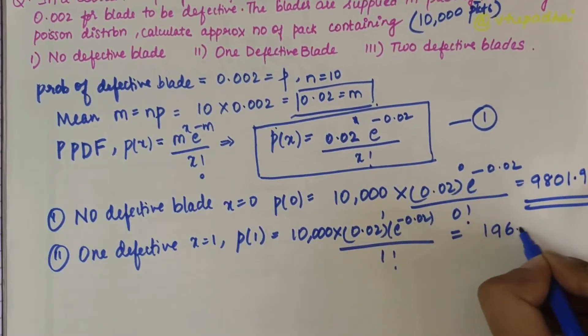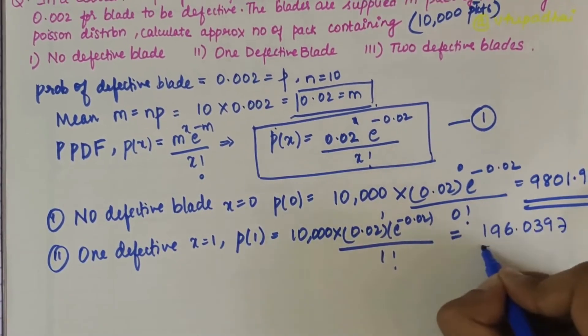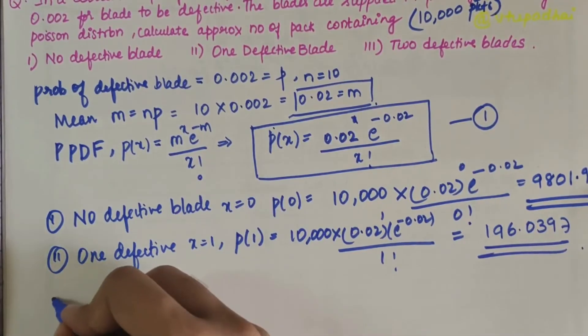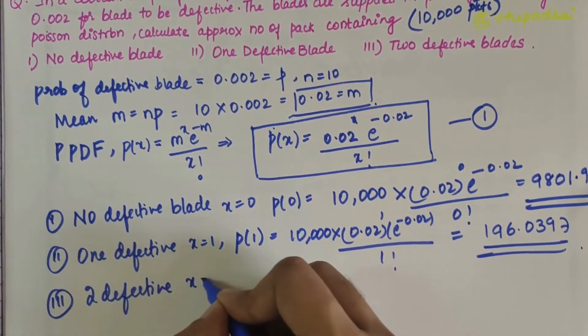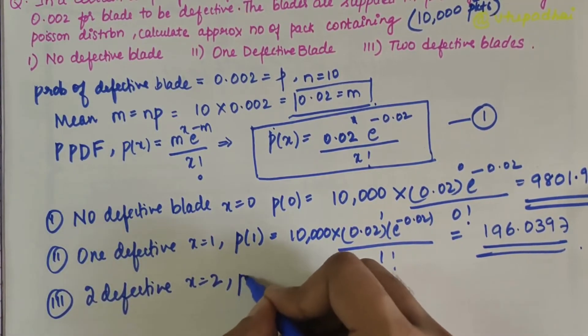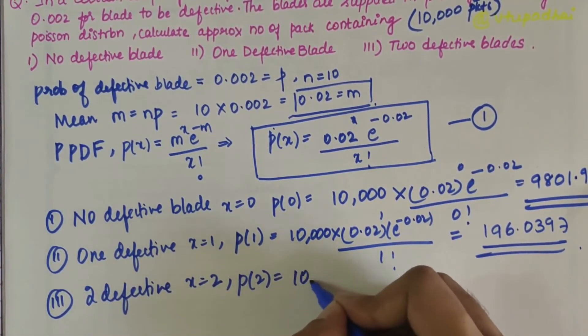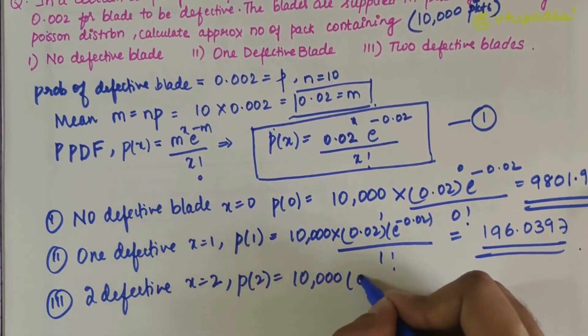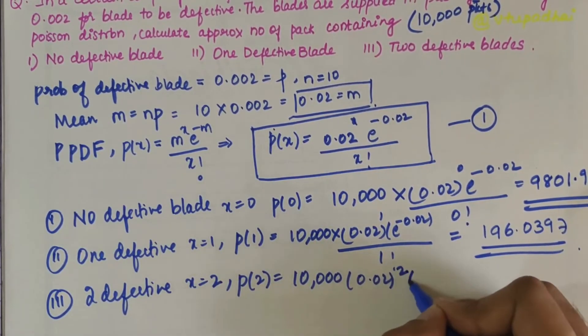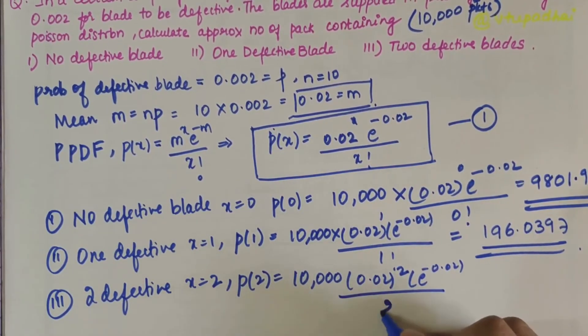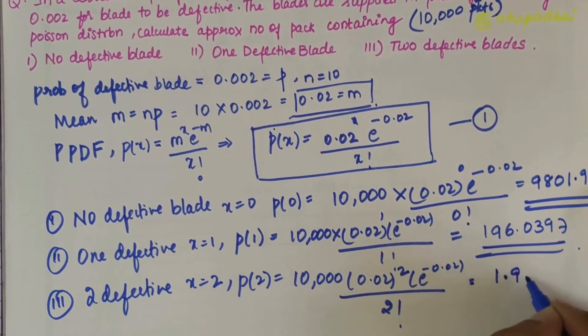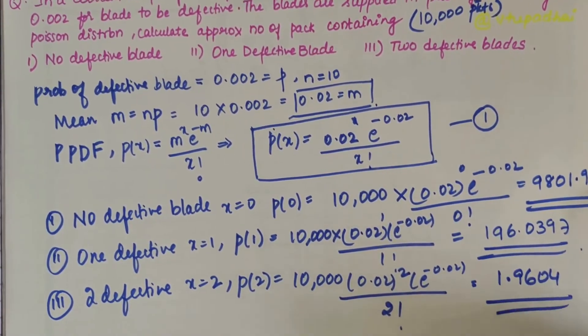For two defective blades, P(2) = 10,000 × (0.02^2 × e^(-0.02)) / 2!. If you solve this, you get 1.9604.